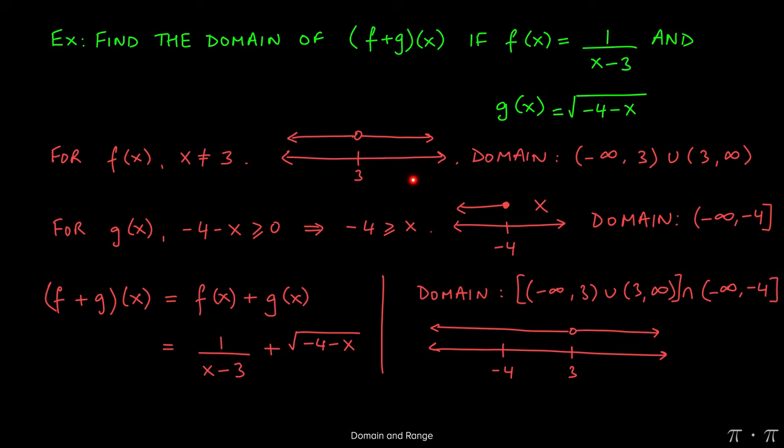Again, this is the same graph that I drew up earlier. Overlaid on top of it, I'm going to draw a closed dot at negative 4 with an arrow going to the left. Same graph that I drew right here.